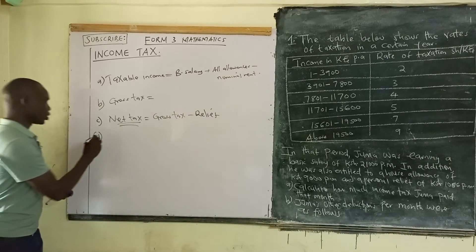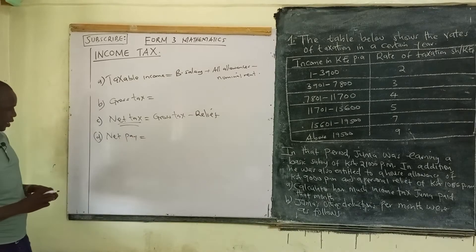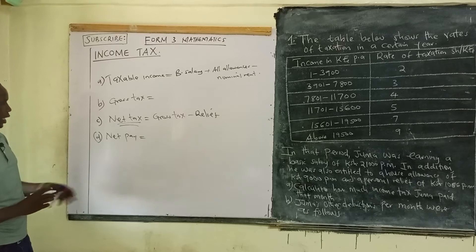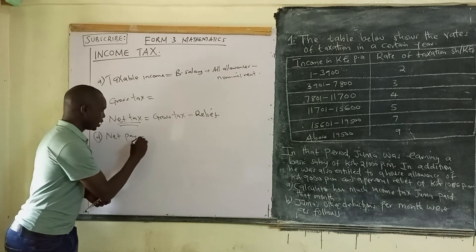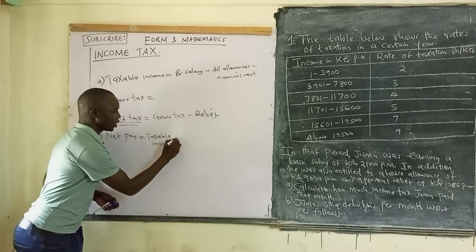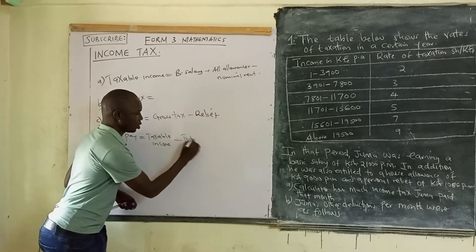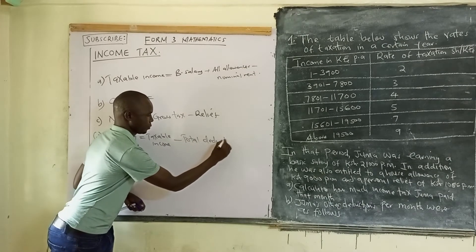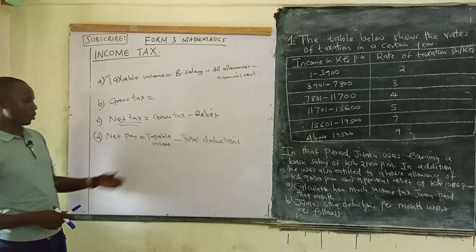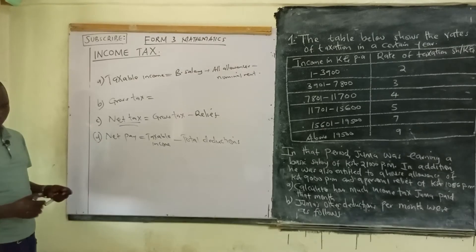We are also going to come across what we call net pay, also known as net salary. Net pay is the total amount of money remaining after paying tax and other deductions. Net pay is equal to taxable income minus total deductions. Deductions are all the amounts taken out of the taxable income to arrive at what the employee takes home.